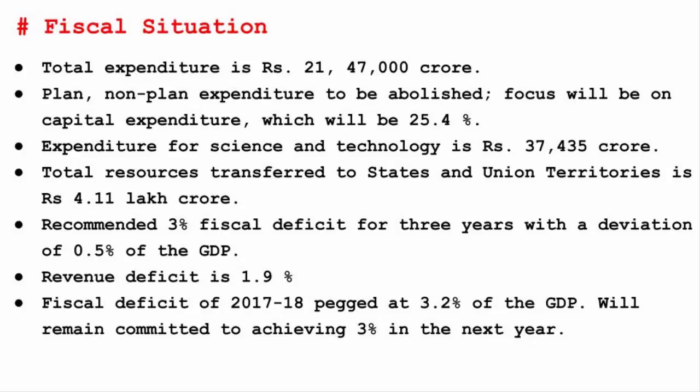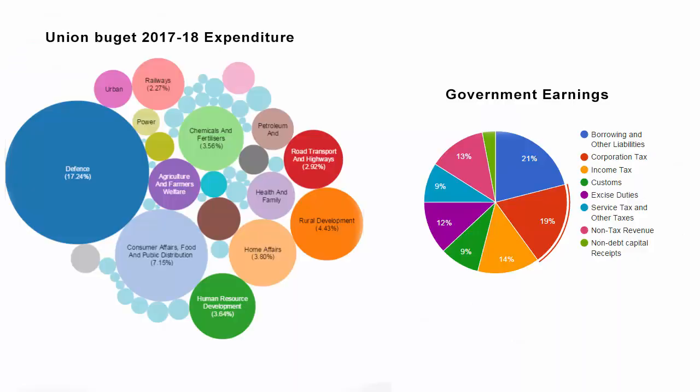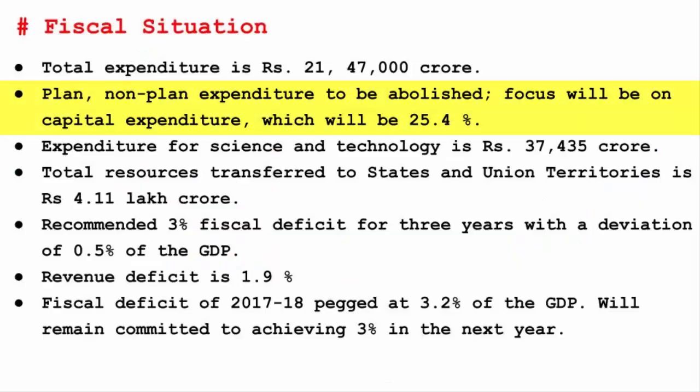Now we will look at the fiscal situation of the country. The total expenditure is Rs. 21,47,000 crore, allocated from the Consolidated Fund of India. Plan and non-plan expenditure is to be abolished. Non-plan expenditure is a running expense mainly including salary payments to government employees, defense, loans to public enterprises, social services, police, pension, and loans to states, union territories, and foreign governments. Planned expenditure goes behind funding the five-year plans. The government wants to abolish both and instead focus on capital expenditure — which is creating and acquiring capital assets — at 25.4%. It's more of a long-term point of view.